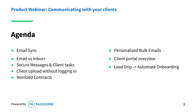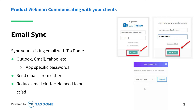Let's start with the email sync function. You can sync your existing email — Outlook, Gmail, Yahoo, AOL, whatever you have — into TaxDome very quickly. Once synced, for accounts where the contact has email sync toggled on, it will pull all your historical emails automatically into TaxDome. Going forward, you can choose to send emails from your current email system just like you do every day, or you can send from inside TaxDome. Either way, any email sent to or received from your contact will automatically populate in the system.